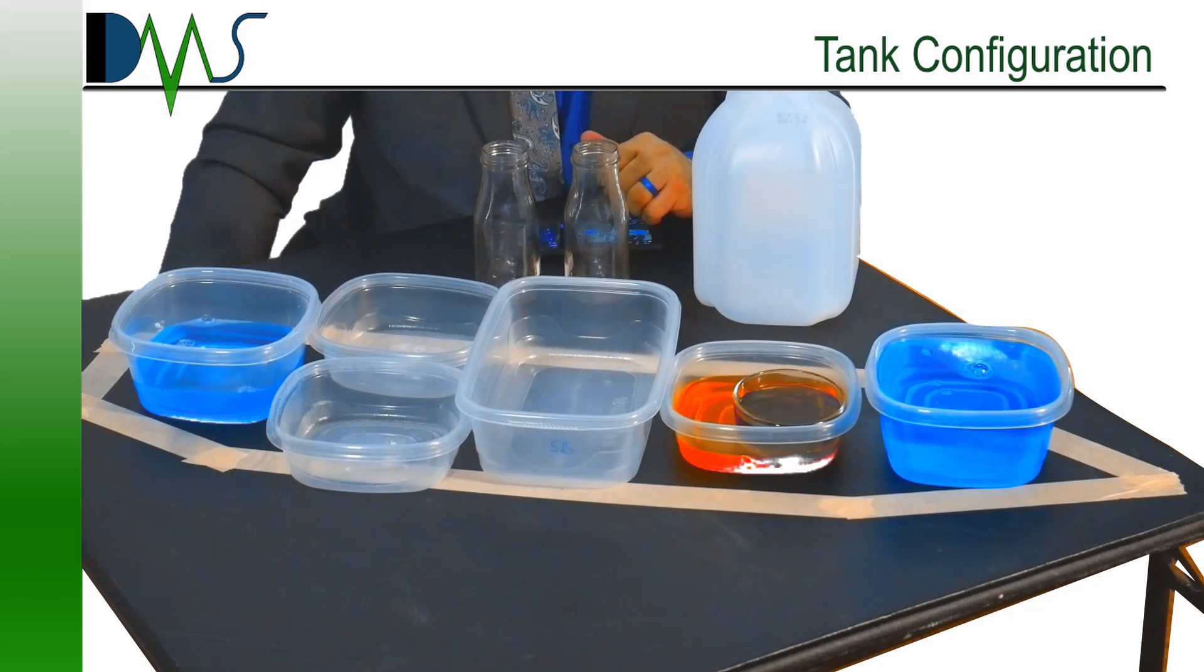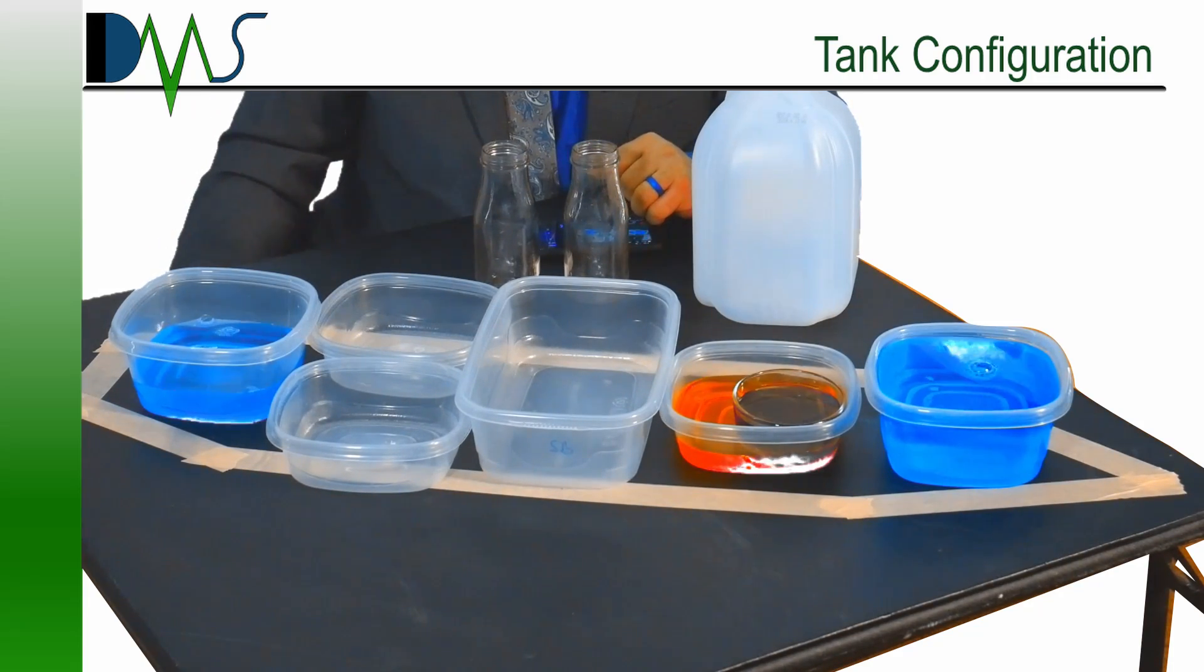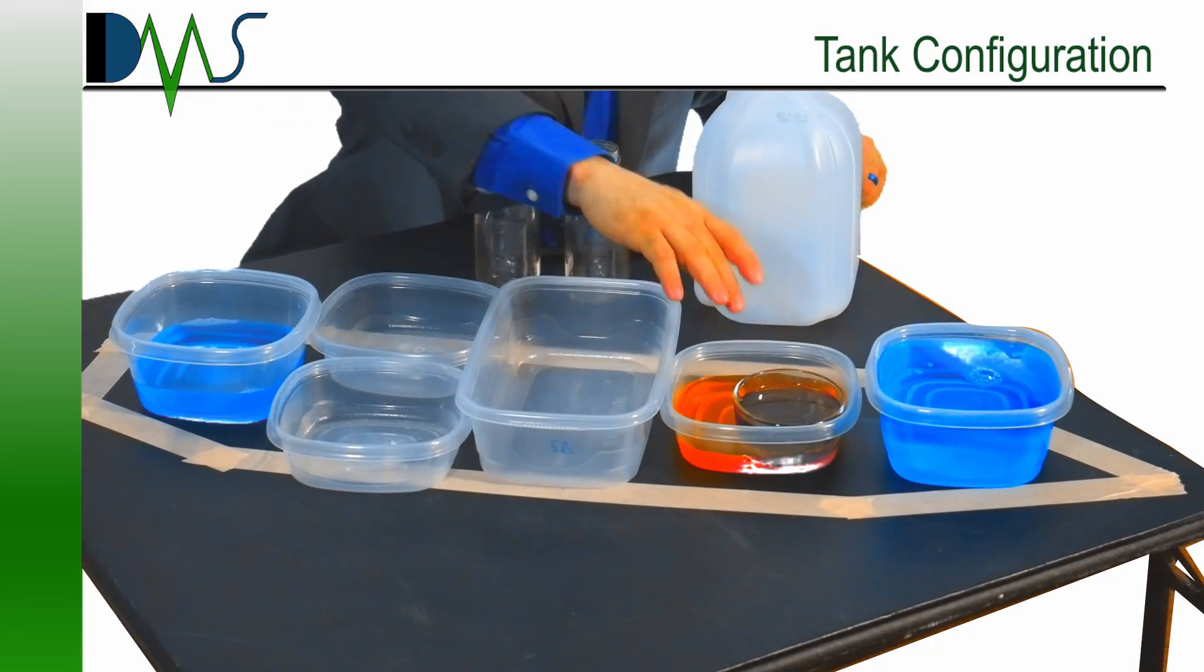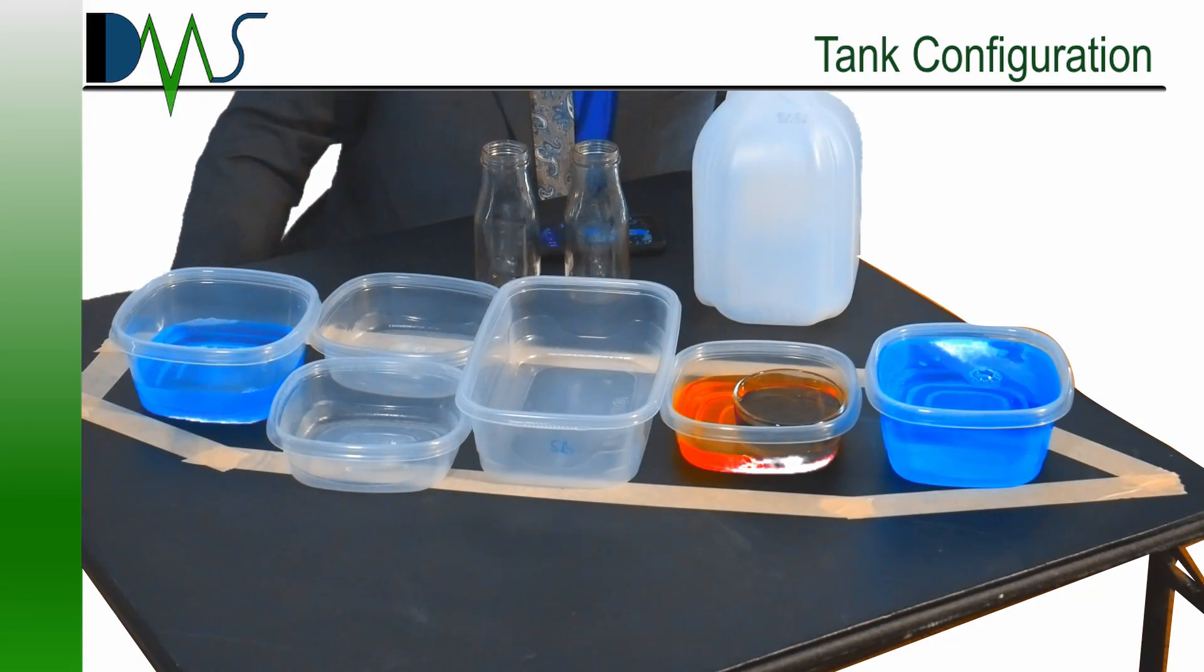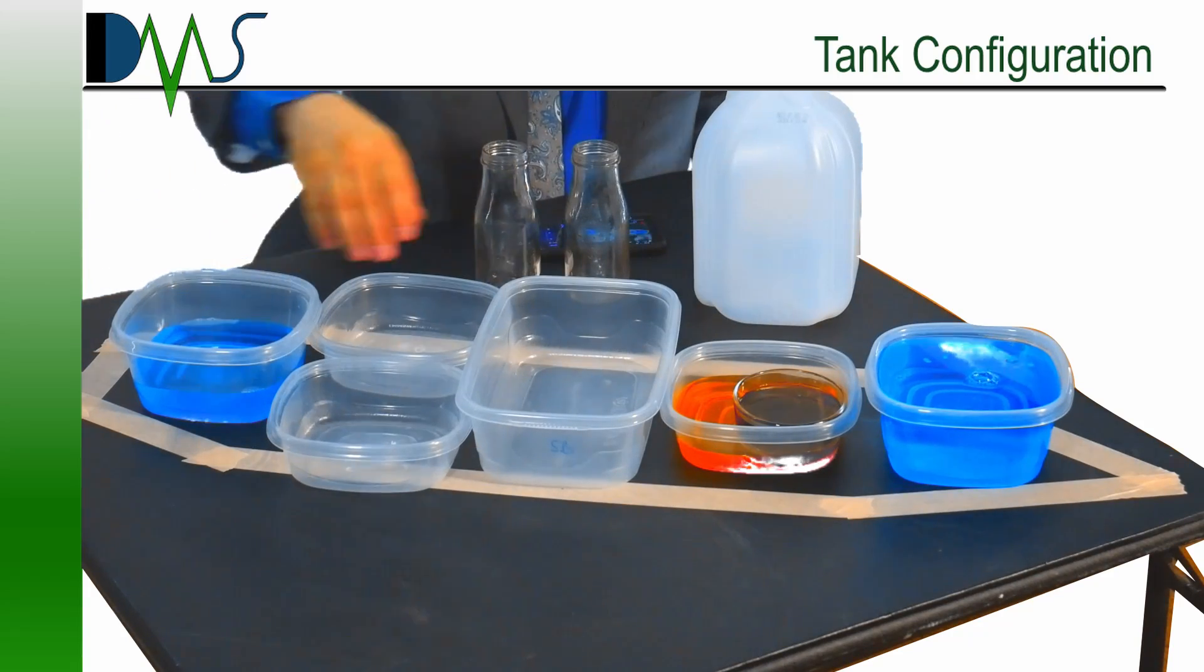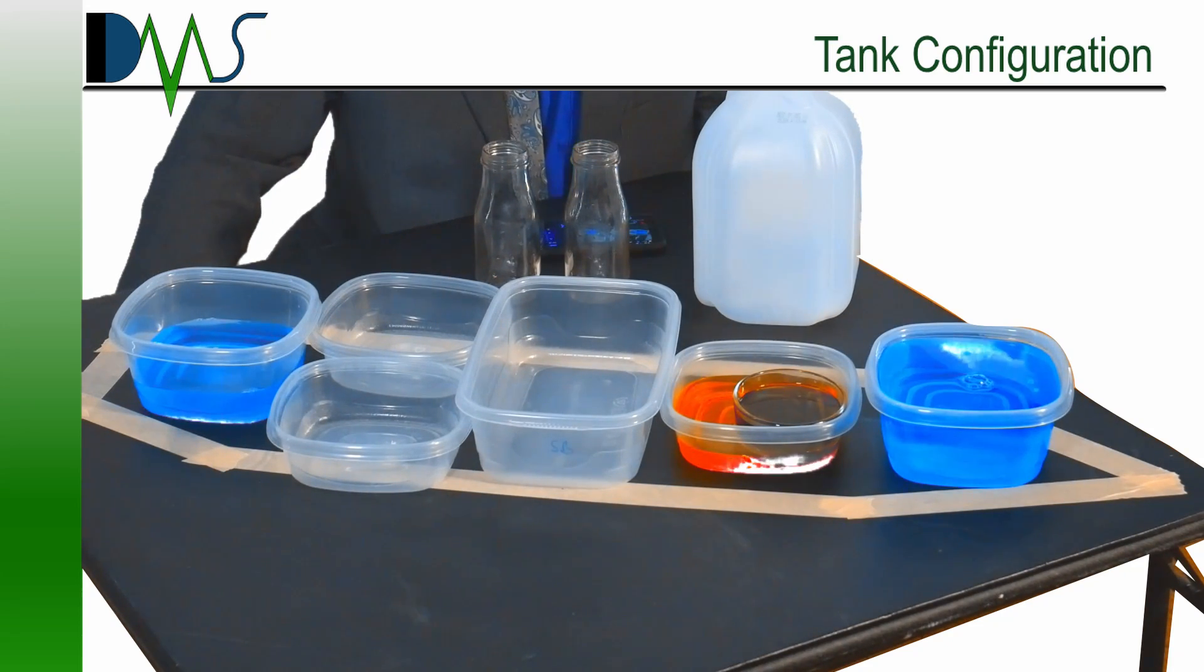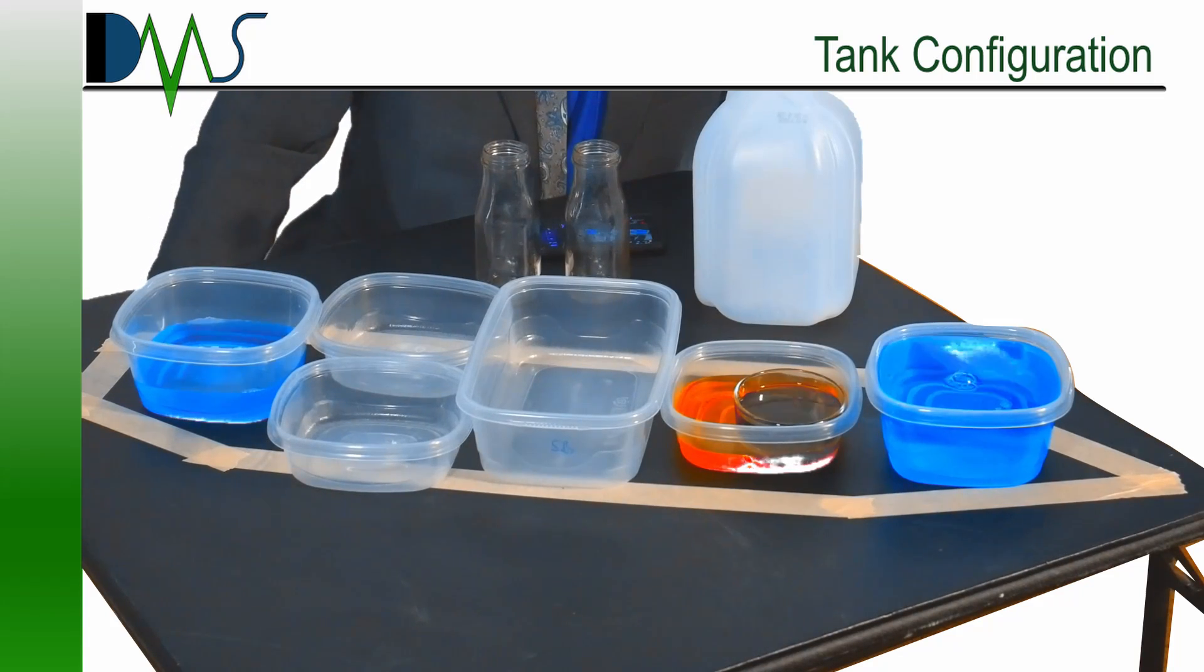And that is how I would play this game of minimizing free surface moment. At the end of the day, we have four tanks with liquid in them, but only three of them are slack tanks. And we have picked the three smallest tanks in terms of free surface moment. And this would be the configuration that would have the minimum amount of free surface moment.